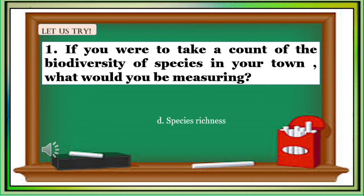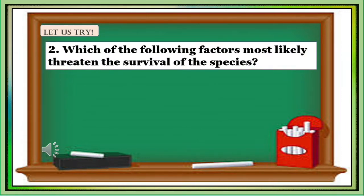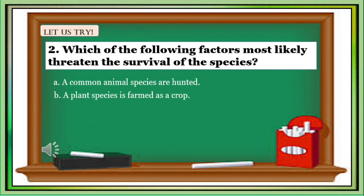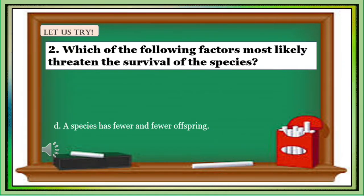Number 2: Which of the following factors most likely threatens the survival of a species? Letter A: A common animal species is hunted. Letter B: A plant species is farmed as a crop. Letter C: Members of an endangered species reproduce. Letter D: A species has fewer and fewer offspring. The correct answer is Letter D — a species has fewer and fewer offspring.